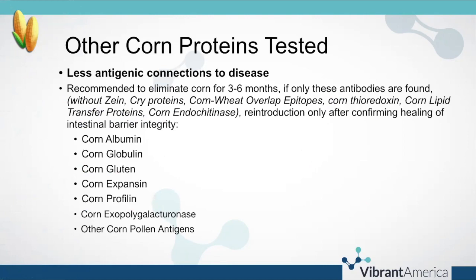There are of course other proteins tested on the corn zoomer. These are less antigenic — they are not completely non-inflammatory, but they are less well studied. Connections to chronic disease or cross reactivity with other foods are not as well known, but antibodies to any of these other markers would still warrant at the very least rotation of the food, and commonly elimination. Depending on how reactive the patient is, this could be long-term, but possibly with reintroduction at some point after healing the intestinal barrier.